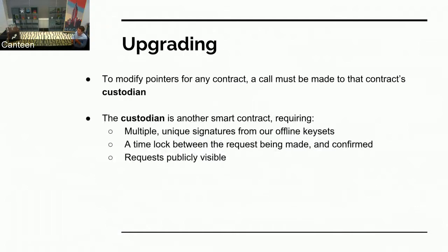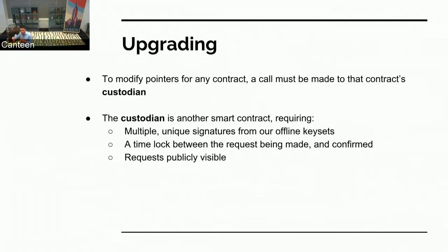How do you modify these pointers? It's not that easy — it requires a custodian contract. The custodian is another smart contract that requires multiple unique signatures from our cold and cryogenic, geographically separated offline sites. We also have a time lock. If we wanted to swap out impl for another one, we can't just change it immediately — we have to submit the request, and there's a time lock enforced such that the change can go into effect after an order of hours, days, or weeks depending on how severe the change is. Everyone can see the proposed changes beforehand.